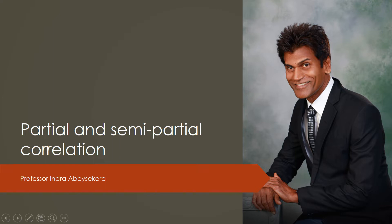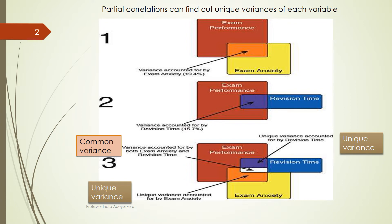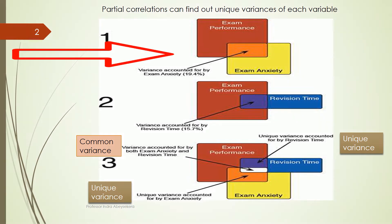Let's look at partial and semi-partial correlation. Let's say our outcome that we want to examine is exam performance. There are factors or variables that can influence the outcome — exam anxiety and revision time are two variables that we can examine. If you look at exam anxiety and its relationship with exam performance, we can find the variance or the explanation that is accounted for by exam anxiety.